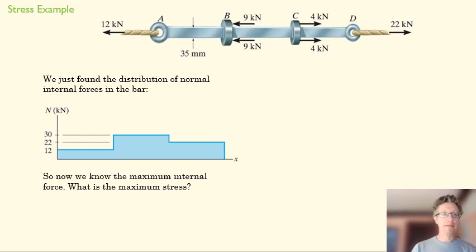So now we know the maximum internal force. So if in that first question you guessed BC, you'd be correct, because everything on the left is pulling to the left. Everything on the right is pulling to the right. And so that internal force is going to be largest in the center.